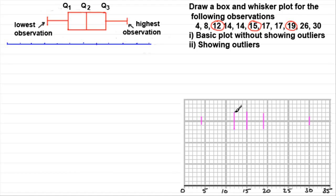To complete the plot, we draw a rectangle around the quartiles and draw what are called the whiskers — hence the name, box and whisker plot. So this is your basic box and whisker diagram.